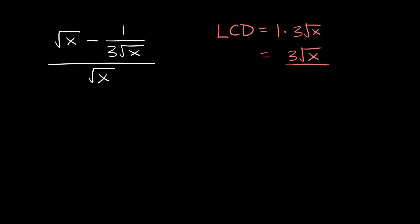Step 2 is simply multiplying all your terms by the LCD. So we're going to multiply this first term times 3 root x, multiply this second term times 3 root x, and also this bottom term times 3 root x. So let's start multiplying some stuff together.